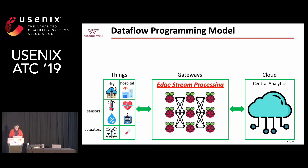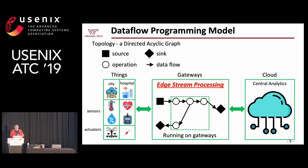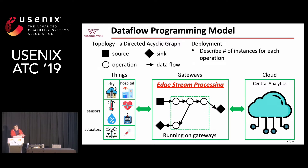Stream processing uses a dataflow programming model. Data flows through the topology from sources to sinks, and a topology is a DAG with three kinds of nodes: source, sink, and operation. A source could be a sensor; a sink could be an actuator or a message queue to the cloud; and an operation can perform arbitrary computation. The programmer also describes the number of instances for each operation for deployment, which supports scalability.